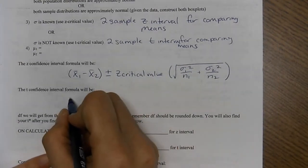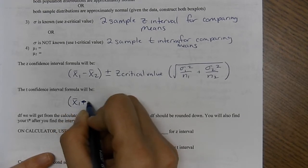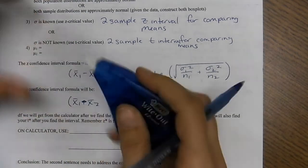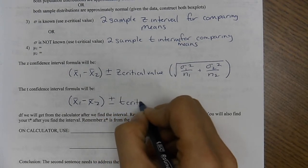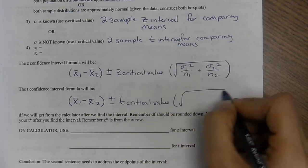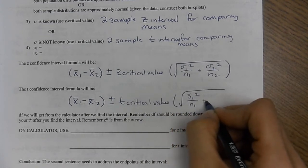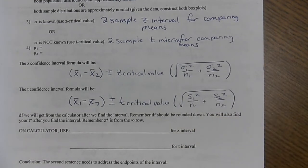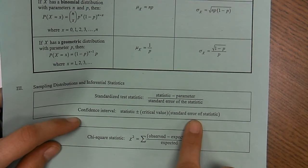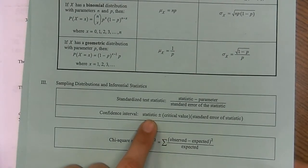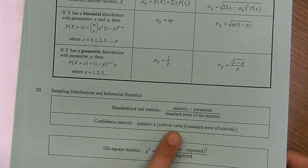If it's a T interval, X bar one minus X bar two, plus or minus your T critical value. So the formula sheet will help you remember the formula sheet. So for confidence interval, it says the statistic plus or minus your critical value times your standard error. So your statistic right now is the two X bars subtracted. The critical value is the critical value. And then the standard error is one of these two.